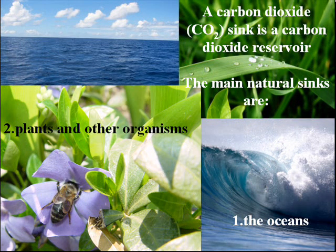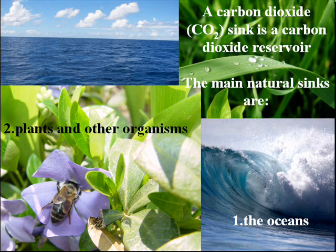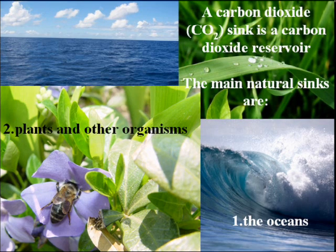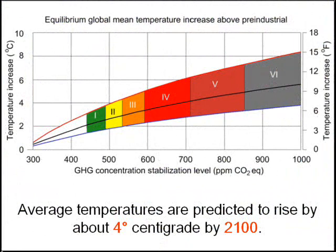A carbon dioxide sink is a carbon dioxide reservoir that is increasing in size and is the opposite of a carbon dioxide source. The main natural sinks are the ocean and plants and other organisms that use photosynthesis to remove carbon dioxide from the atmosphere by incorporating it into biomass and releasing oxygen into the atmosphere.